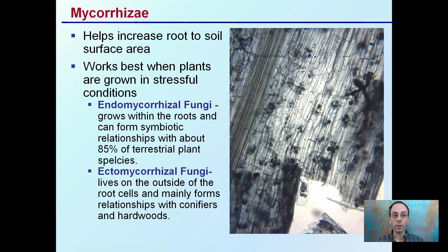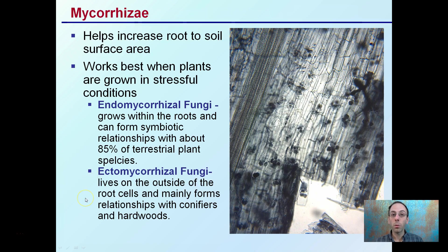Looking at mycorrhizae, for example, this helps increase root-to-soil surface area interaction. It works best when plants are grown in stressful conditions, and there are two different types. There's endomycorrhizal fungi, which grows within the roots and can form symbiotic relationships with about 85% of terrestrial plant species. For cannabis, this is what you're looking for — you want an endomycorrhizal fungi species.